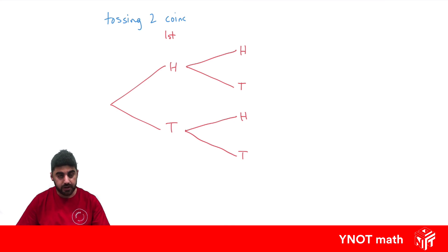On a tree diagram we write the probabilities on the branches. The probability of getting a head is a half, probability of getting a tail is a half. Same over here and here and same here and here. To know if you've done it correctly, each set of branches should always add up to one because they're supposed to cover all possibilities in their group.